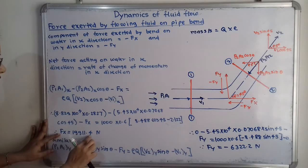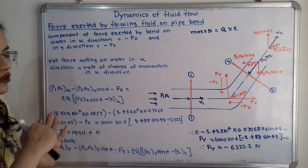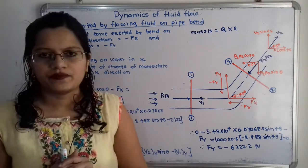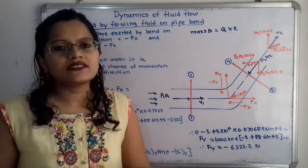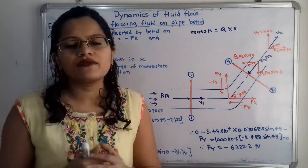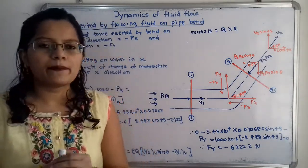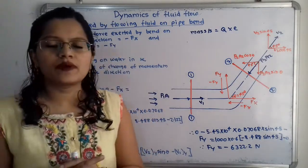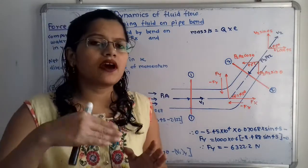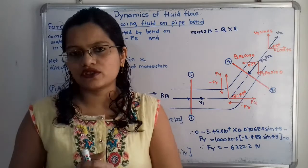Solving the x-direction momentum equation gives Fx = 19,911.4 N.